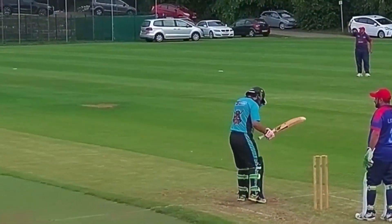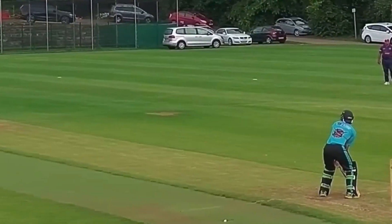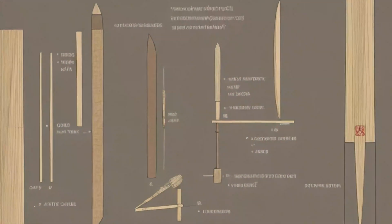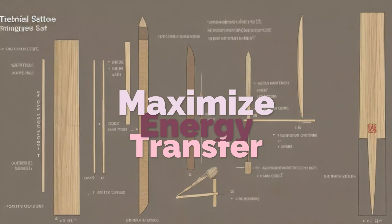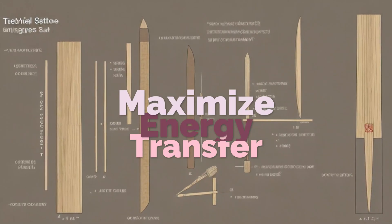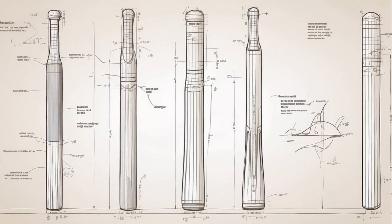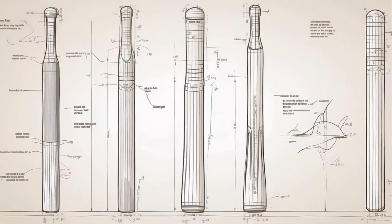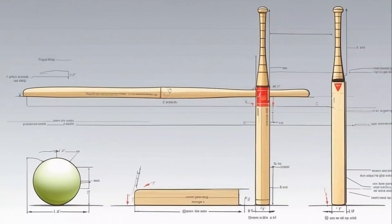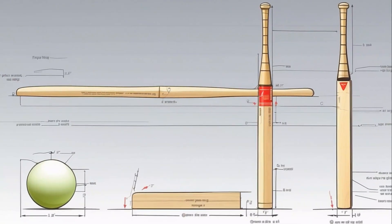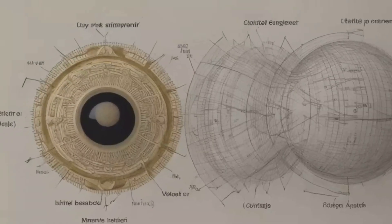The batsman, on the other hand, is not just swinging a piece of willow. The bat, a marvel of engineering, is designed to maximize the transfer of energy from the player to the ball. The sweet spot — that magical area on the bat where it feels just right to hit the ball — is a result of careful calculations involving mass distribution and vibration frequencies.